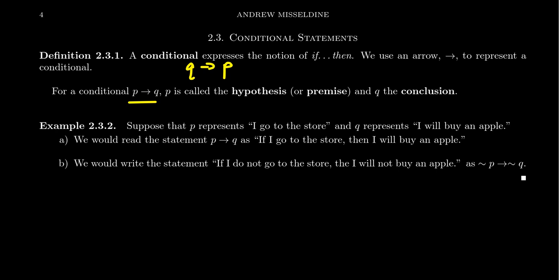Another way we read this is 'P implies Q.' P implies Q is not the same thing as Q implies P. The order of the elements makes a big difference. Conjunctions and disjunctions — that is, ands and ors — are commutative operations; the order didn't matter. But for conditionals, it makes a big, big deal.